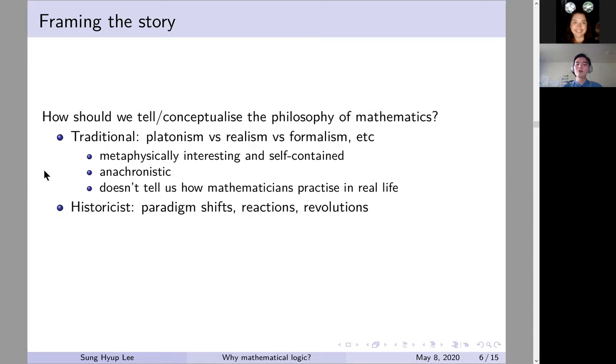So, the second part of this talk is giving a brief history of infinity and sort of the role it's played in how we think about rigor in mathematics. So, just to frame the story, how should we tell the story of the philosophy of mathematics? And I've already mentioned the traditional framework, the various schools, platonism, realism, formalism, et cetera. But while this is philosophically interesting, perhaps, it deals with metaphysical problems.